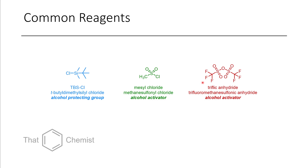Finally, there's triflic anhydride. Triflo chloride also exists, but triflic anhydride is the more commonly obtained form. You can use this to install a triflate. Sometimes we call this trifluoromethanesulfonic anhydride, but we tend to abbreviate names as much as possible. This is a lot like mesyl chloride — triflates are just a little bit more reactive.